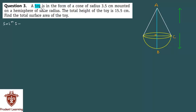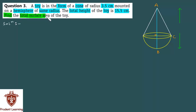A toy is in the form of a cone of radius 3.5 cm mounted on a hemisphere of the same radius. The total height of the toy is 15.5 cm. Find the total surface area of the toy.